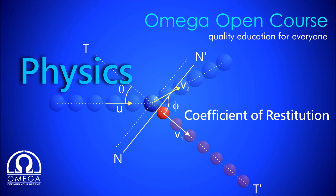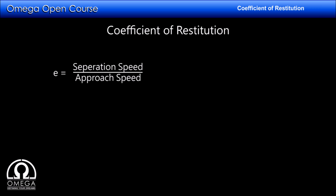Welcome to Omega open course. In this video we will discuss the coefficient of restitution and its relation with velocity in different situations. The coefficient of restitution is basically the ratio of separation velocity to approach velocity, and it depends on the property of the material of the two colliding bodies.